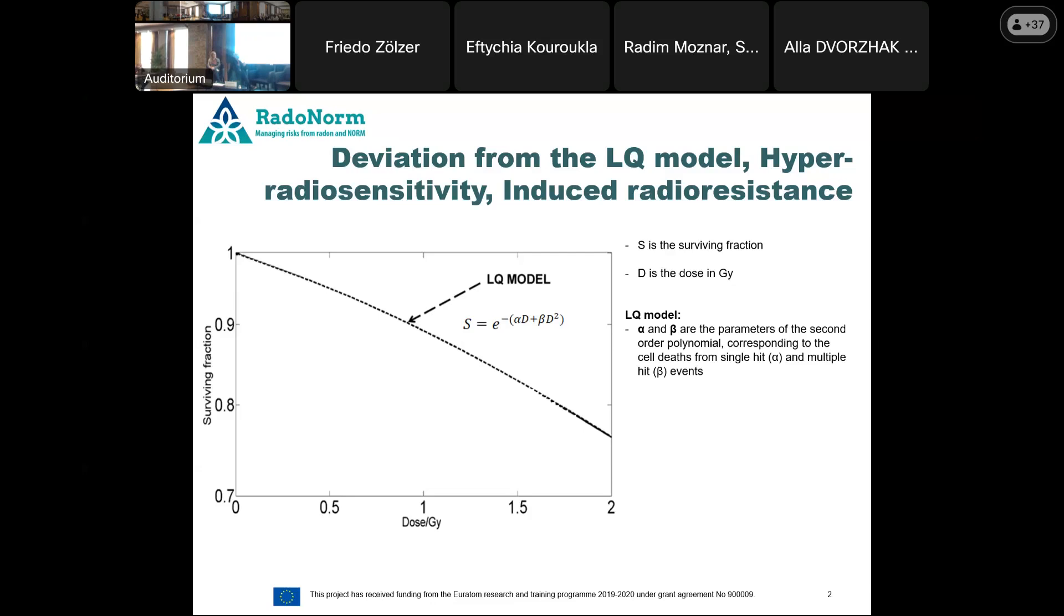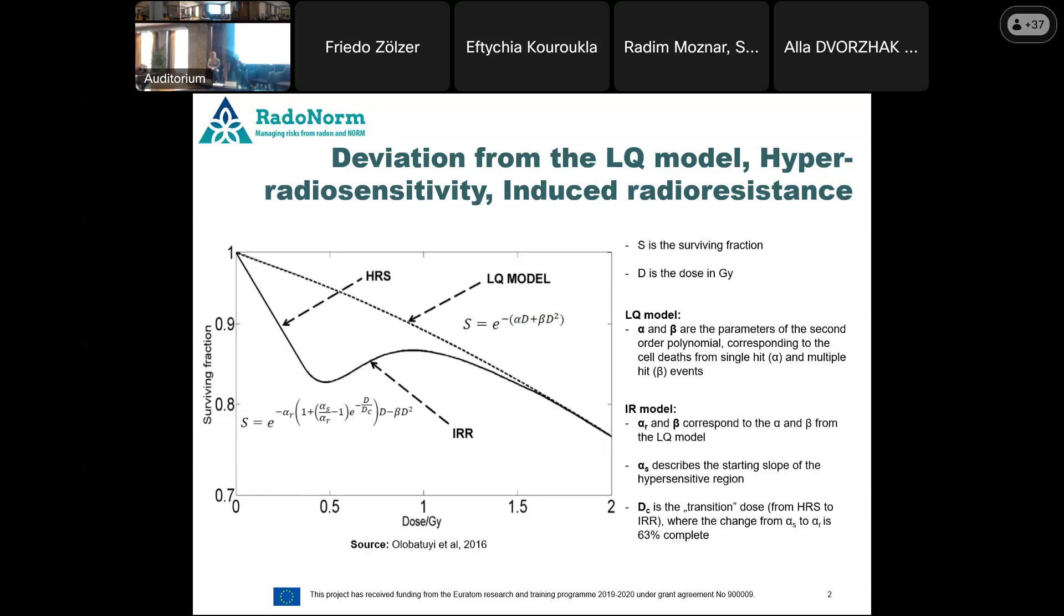But for certain cell cultures, it actually decreases with a much more increased cell death to a certain point, to a local minimum, where the cell survival changes. Changes from around half a gray to 1 gray, if you increase the dose, the surviving fraction of the cells will also increase. This first section is called hyper-radiosensitivity where the cells die much faster. And these local minimum and maximum, between these are the induced radioresistance.